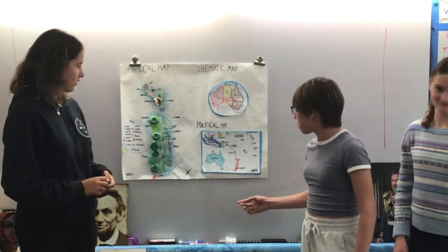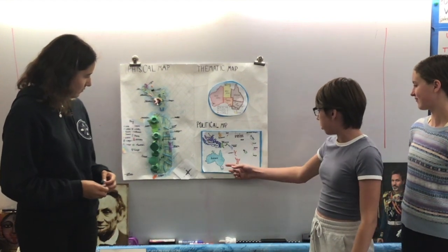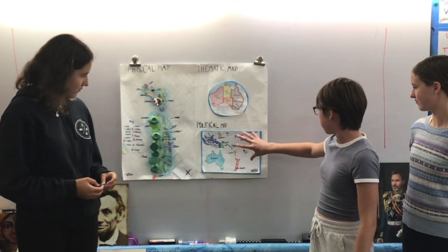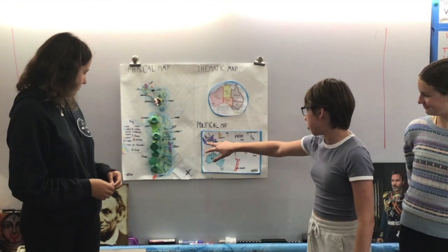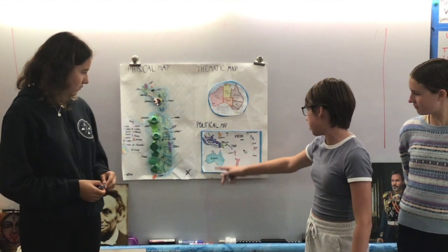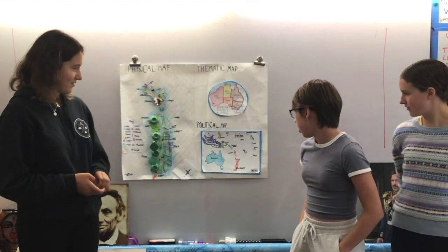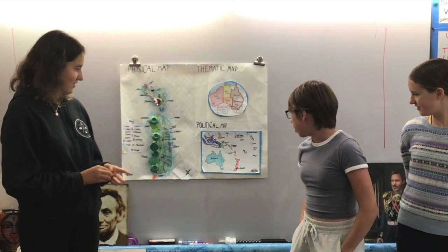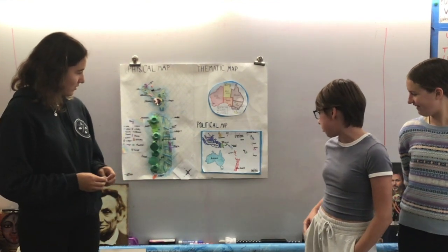This is the political map. This is Australia, New Zealand, we have the Oceania Islands, and then we have Indonesia, Singapore, Malaysia, Brunei, Philippines, and East Timor. The scale is 1 centimeter to 250 miles. Thank you for listening.